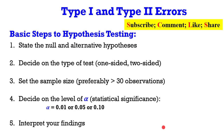Decide on the type of test — is it a one-sided test or a two-sided test? Most econometric packages these days are programmed on the two-sided test. Set your sample size; always make sure that you have at least 30 observations or more. Then decide on the level of alpha, that is the statistical significance level — are you going to set alpha at 0.01, 0.05, or 0.10, that is at 1%, 5%, or 10%? After that, interpret your findings. Always endeavor to scribble these basic steps on a piece of paper before you begin your analysis.